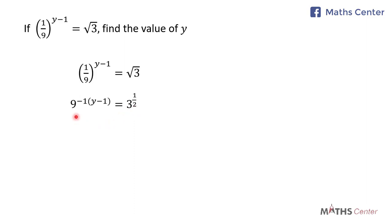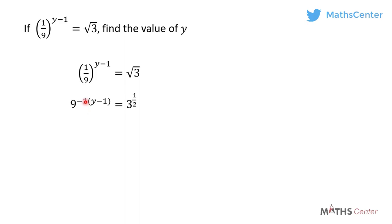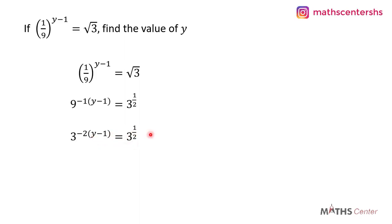9 can be expressed in index form such that it will have a base of 3. Since 9 is equal to 3 exponent 2, and we already have negative 1 here, we multiply 2 times negative 1 which gives us negative 2. So our equation becomes 3 exponent negative 2 times y minus 1 is equal to 3 exponent 1 divided by 2. Both sides now have a base of 3, so we can equate the exponents.